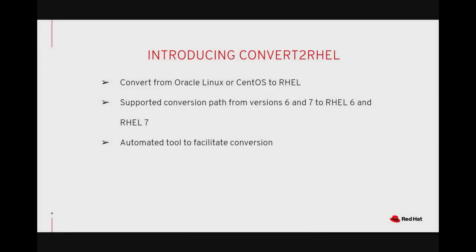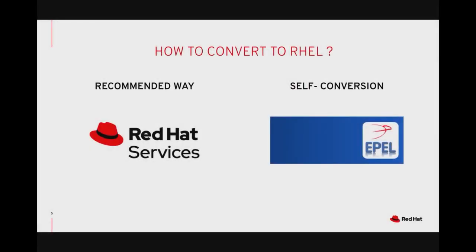The utility reduces the migration overhead and cost. Supported conversion paths are from CentOS or Oracle Linux 6 to Red Hat Enterprise Linux 6, and CentOS or Oracle Linux 7 to RHEL 7. When you're ready to migrate your systems onto RHEL, we recommend that you engage Red Hat services for a streamlined migration effort. Alternatively, you could self-convert by downloading the Convert to RHEL utility from the unsupported Extra Packages for Enterprise Linux repository, or EPEL repo. Pavel will now demonstrate how the Convert to RHEL utility works.